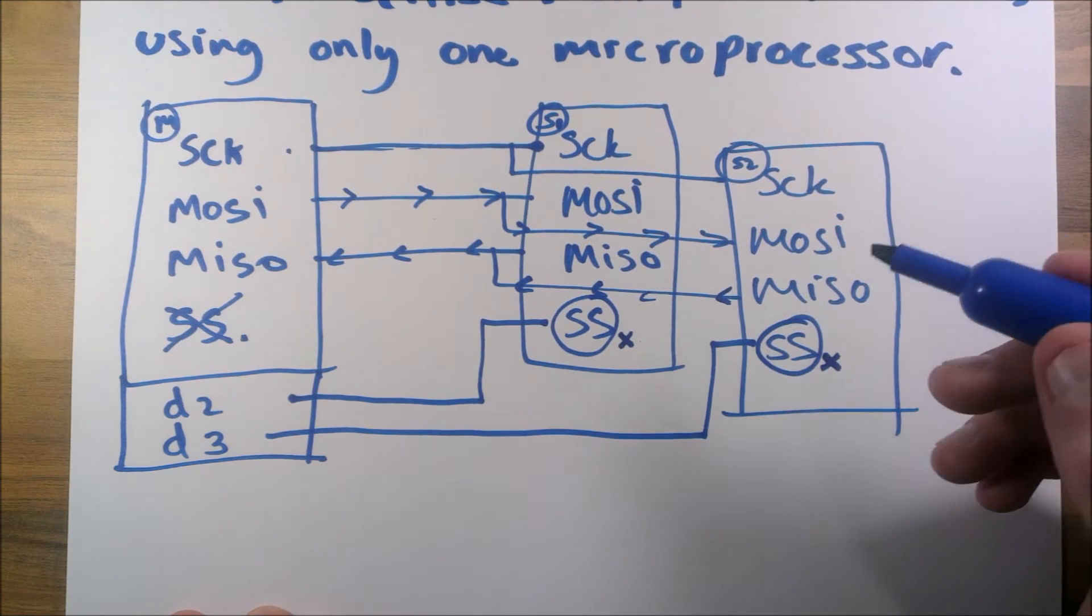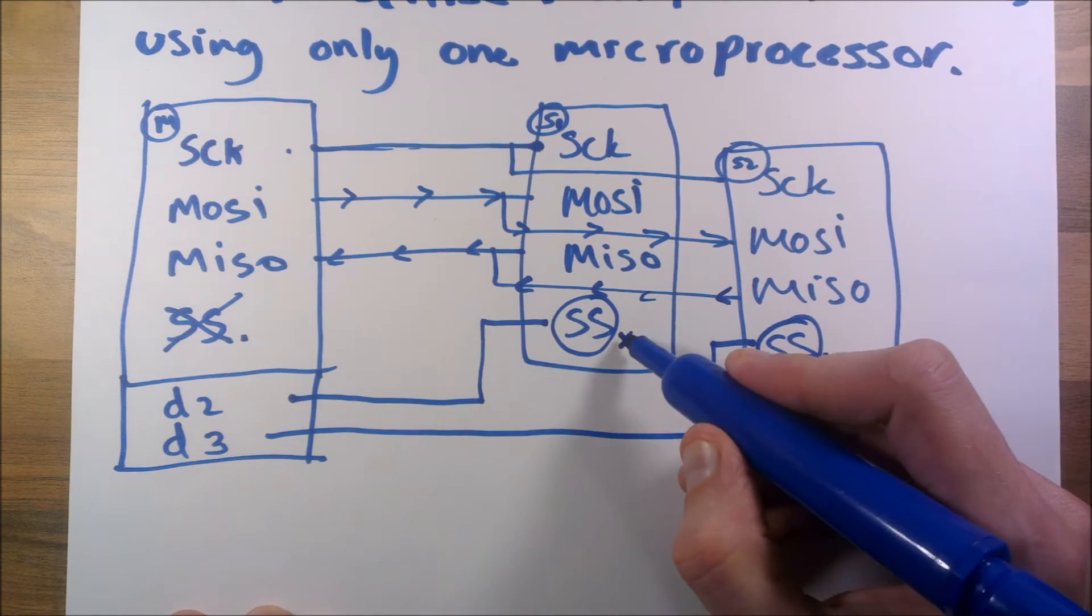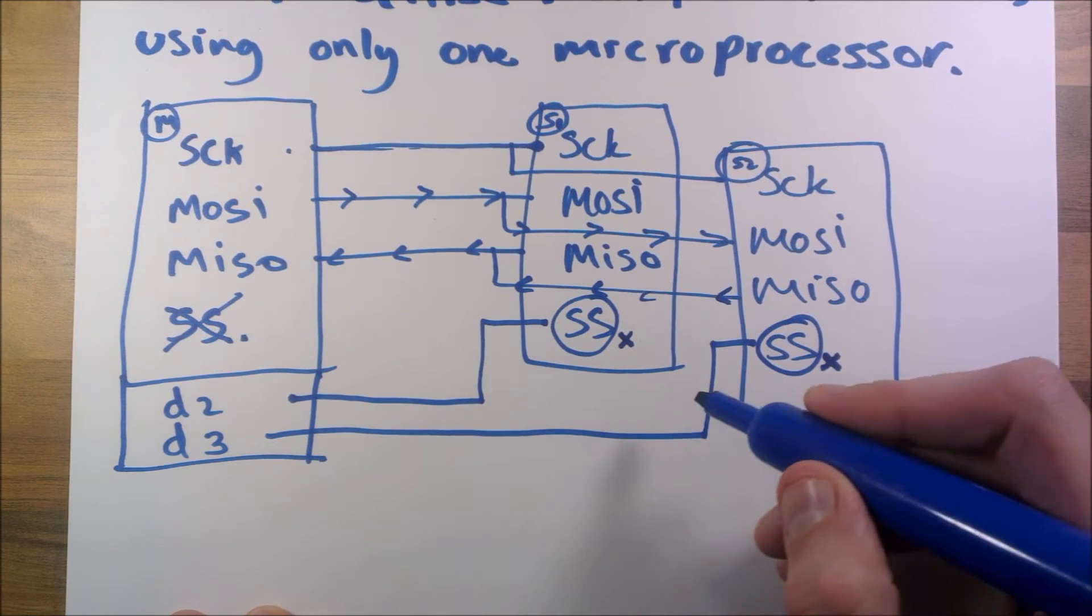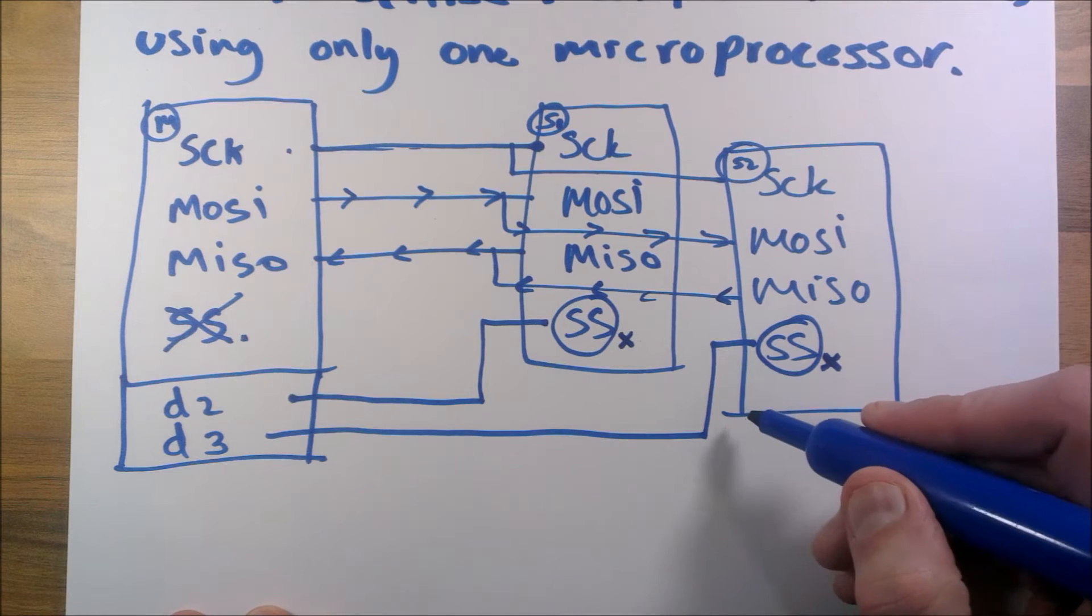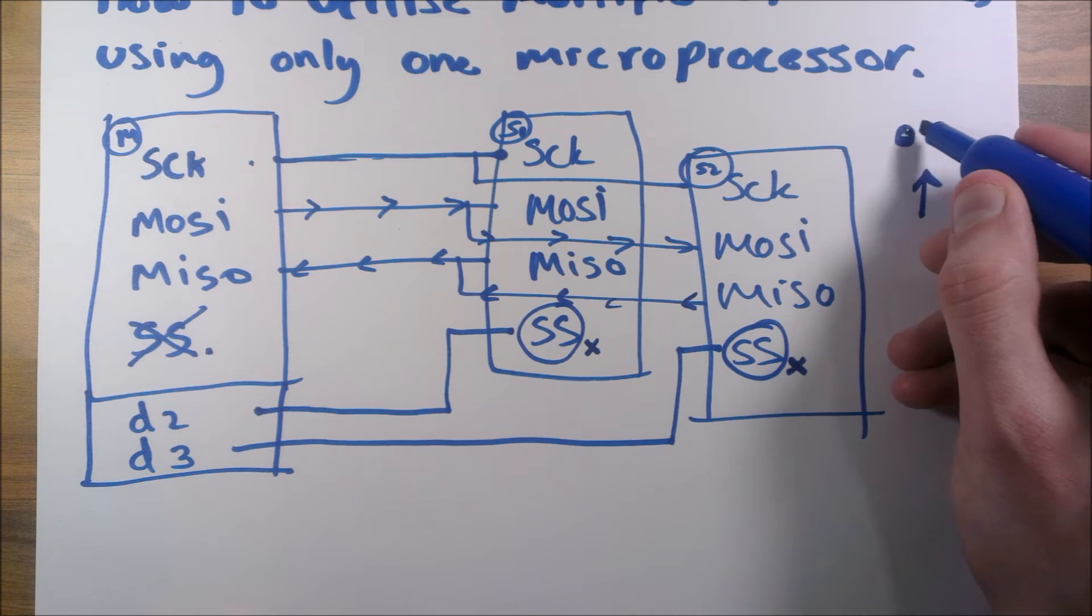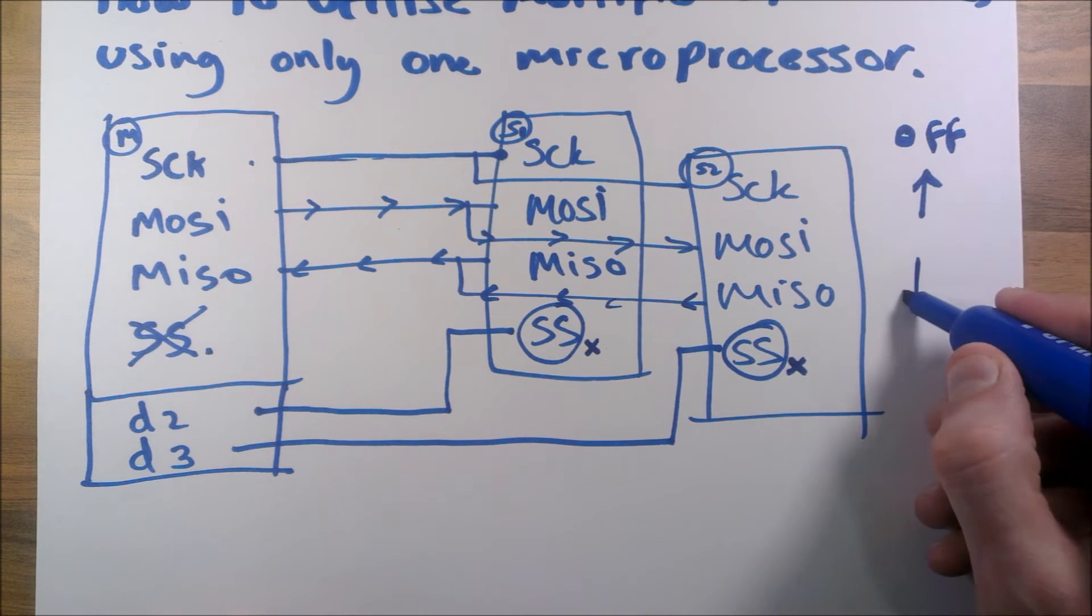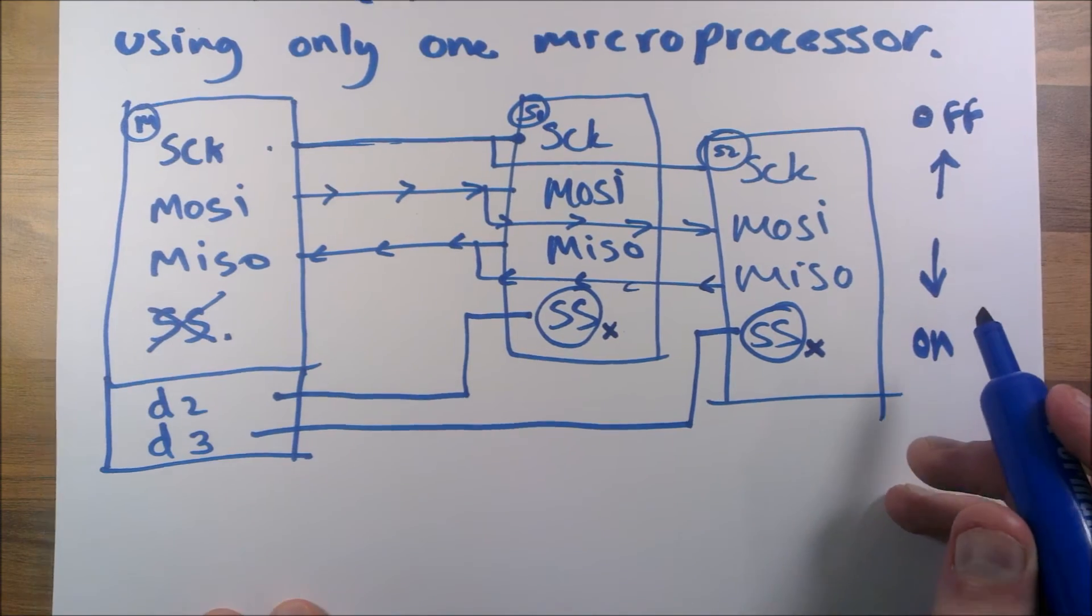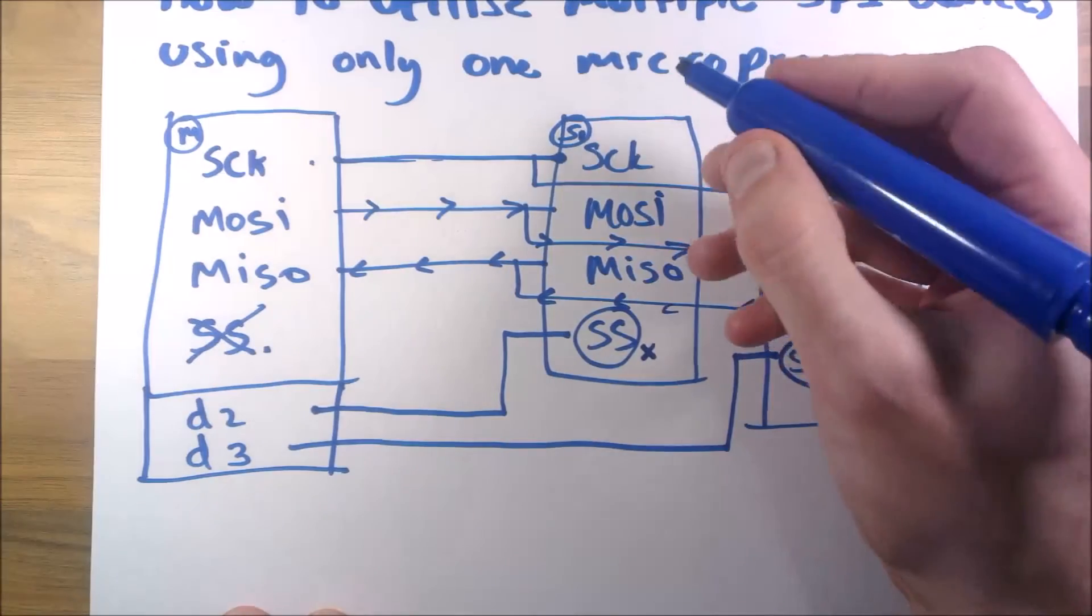What that allows us to do is if we want to talk to this one we can set it low, and if we want to talk to this one we can set this one low. High means off and low means on.